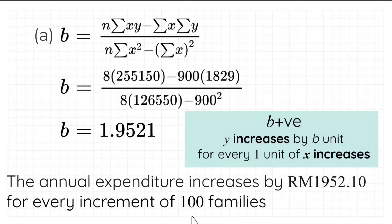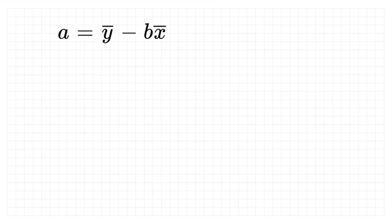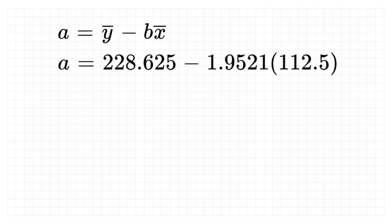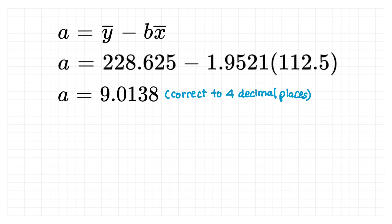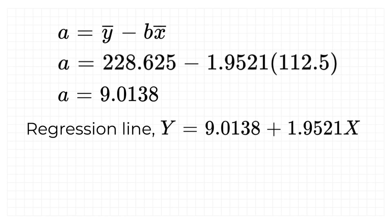To find coefficient a, we substitute the mean of y, coefficient b, and the mean of x into the formula, giving a equals 9.0138. Now substituting coefficients a and b into y equals a plus bx, our regression line is y equals 9.0138 plus 1.9521x.